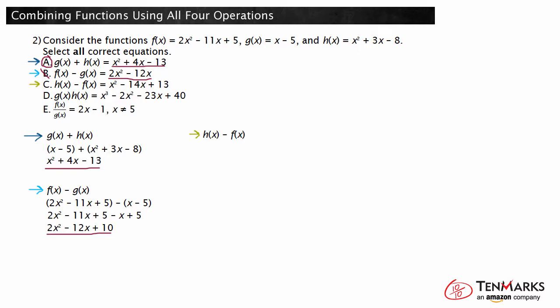Let's look at the third equation. Substituting the given expression in for h of x and f of x results in the quantity x squared plus 3x minus 8 minus the quantity 2x squared minus 11x plus 5. Distributing the negative results in x squared plus 3x minus 8 minus 2x squared plus 11x minus 5. Now we can combine like terms. Combining x squared and negative 2x squared gives negative x squared. Combining 3x and 11x gives 14x, and combining negative 8 and negative 5 gives negative 13. So, h of x minus f of x is negative x squared plus 14x minus 13. This is different from what is given in the answer choice.